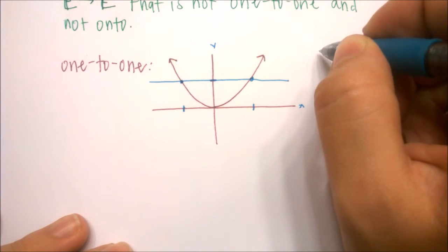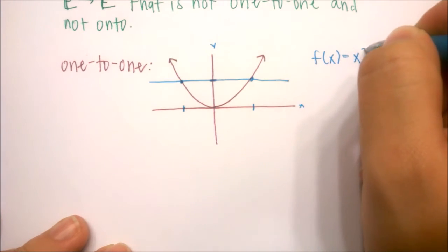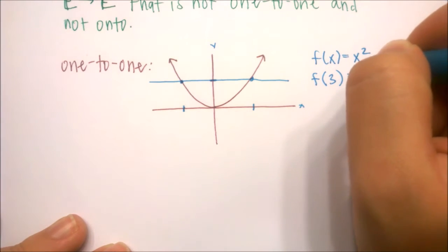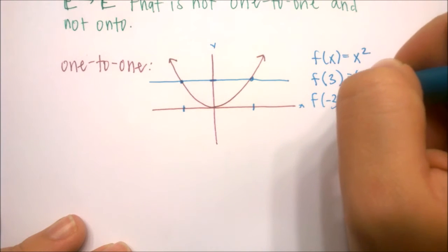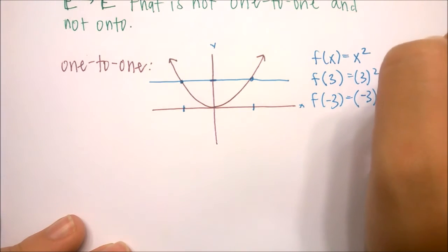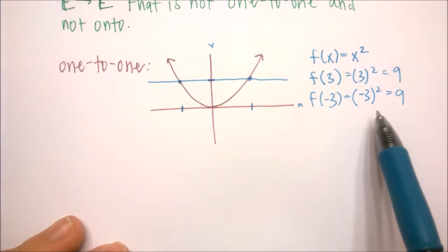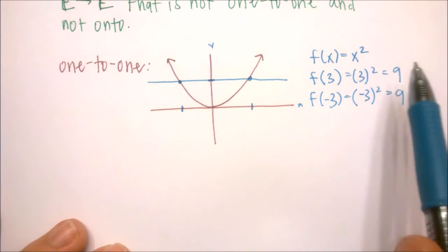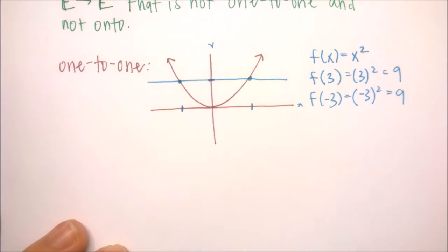We can look at it more specifically and say: if our function is f(x) = x², then f(3) = 3² and f(-3) = (-3)², and these are both equal to 9. So since there are two x values that map to one y value, this function is not one-to-one.